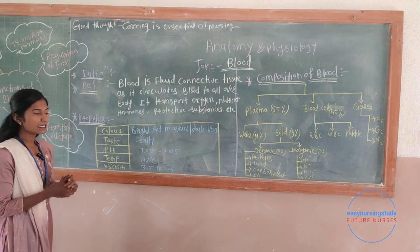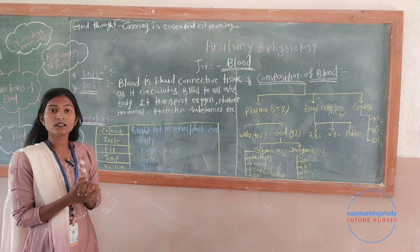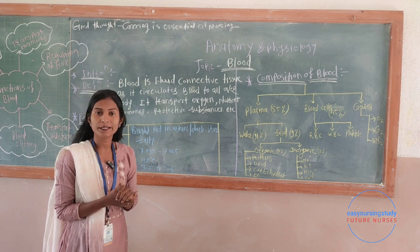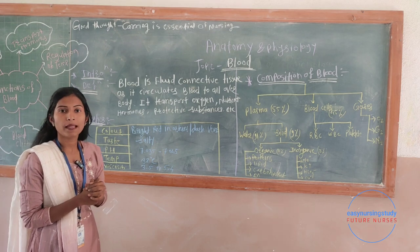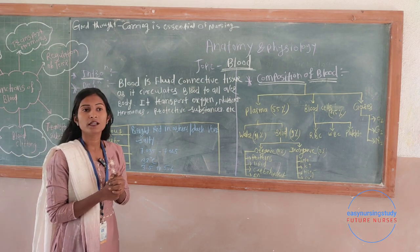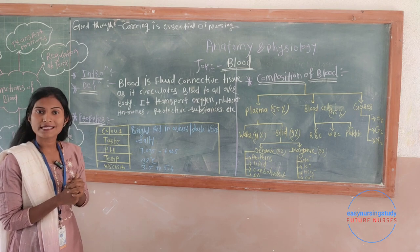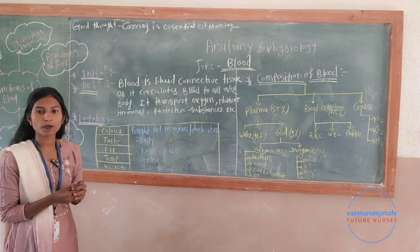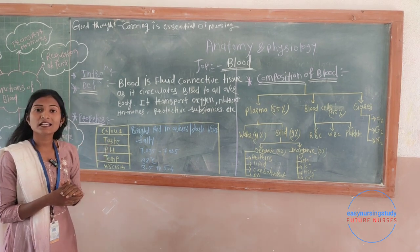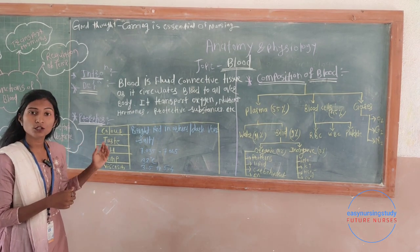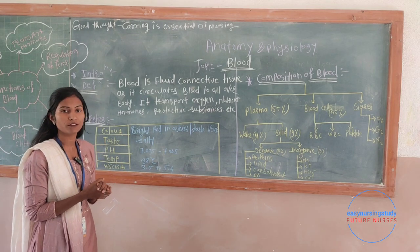The next property is taste. The taste of blood is salty. Why does blood have a salty taste? Because of the presence of sodium atoms in the blood — there is about 80% sodium presence in the composition of blood. The third property of blood is pH. Blood is alkaline in nature, with an exact pH of 7.35 to 7.45.